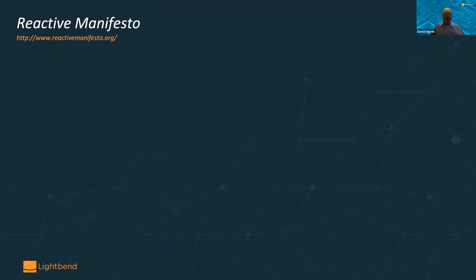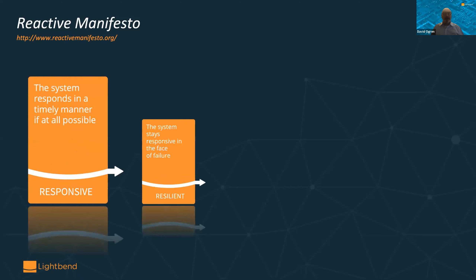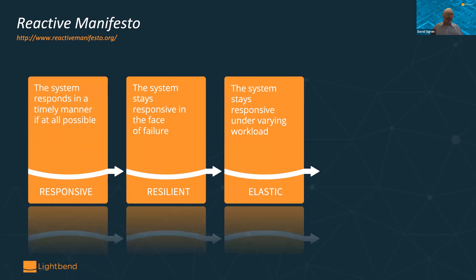Since then, there's been a lot more technical detail written about this, including the Reactive Principles. But it all started with the Reactive Manifesto — it's really only a page and a half long, so if you haven't read it, I recommend you do. The three requirements the Reactive Manifesto posits as necessary for cloud-native computing are responsiveness, resilience, and elasticity.